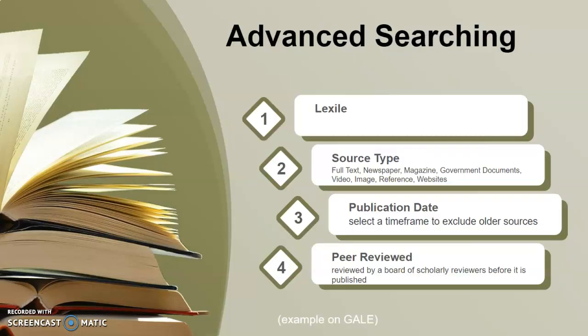In the advanced search, you can adjust Lexile and also choose your source type. You can pick full text, newspapers, magazines, government documents, videos, images — there are lots of different types of sources that you can find.